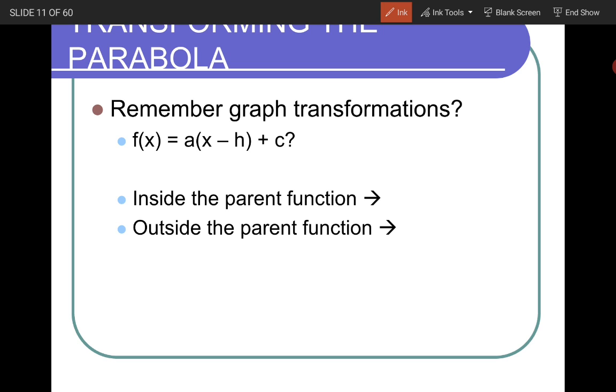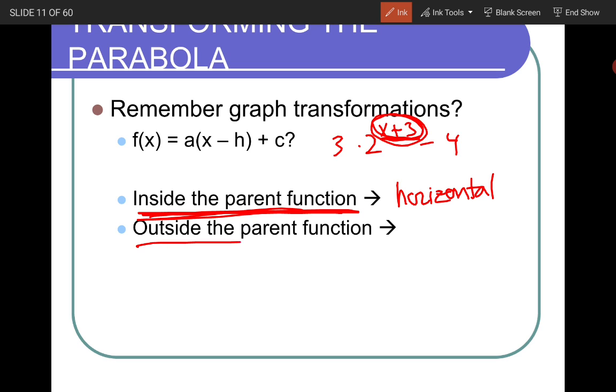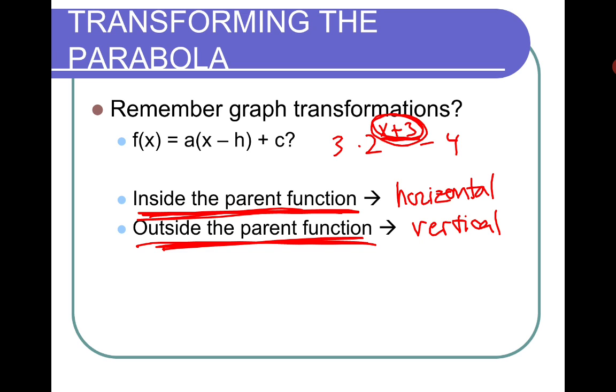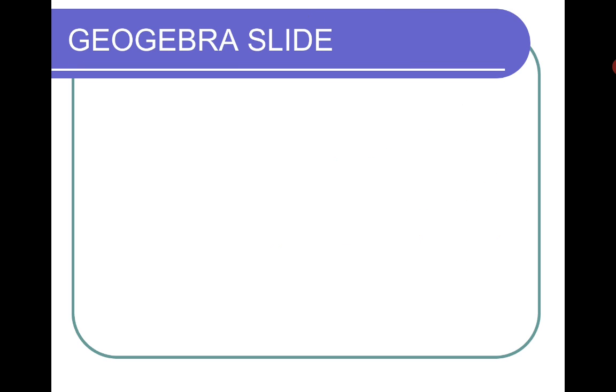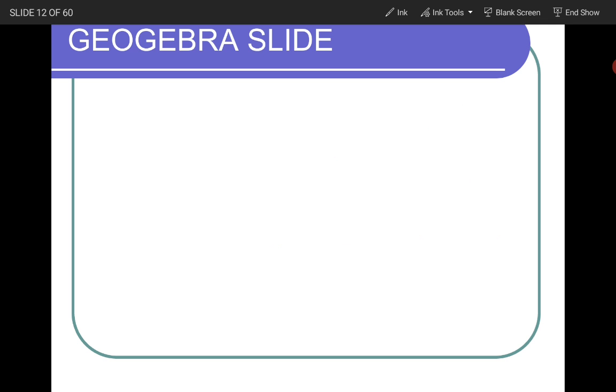So I know with exponentials, we had it where it was like two to the X plus three and then times three and then minus four. And remember we had this concept where it was inside the parent function. Remember if it was inside the parent function, do you remember if it goes horizontal or vertical? It would be horizontal. It deals with horizontal movement. And then outside the parent function, it's going to deal with vertical movement, like vertical dilation, vertical translation. And so we're going to see some examples. Maybe it might become more apparent to you now.